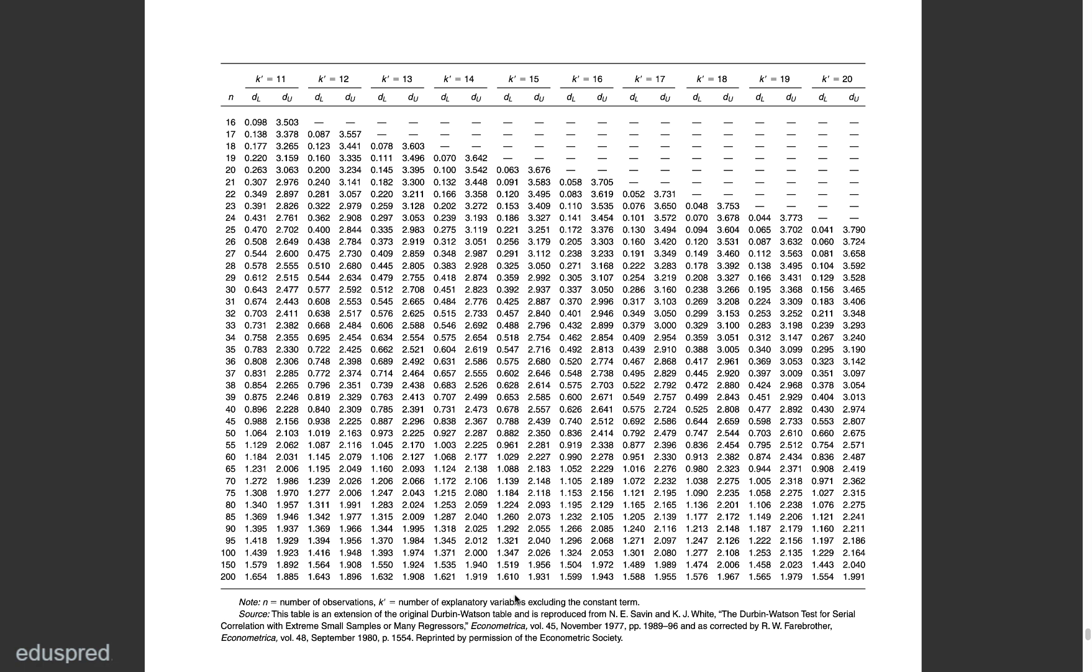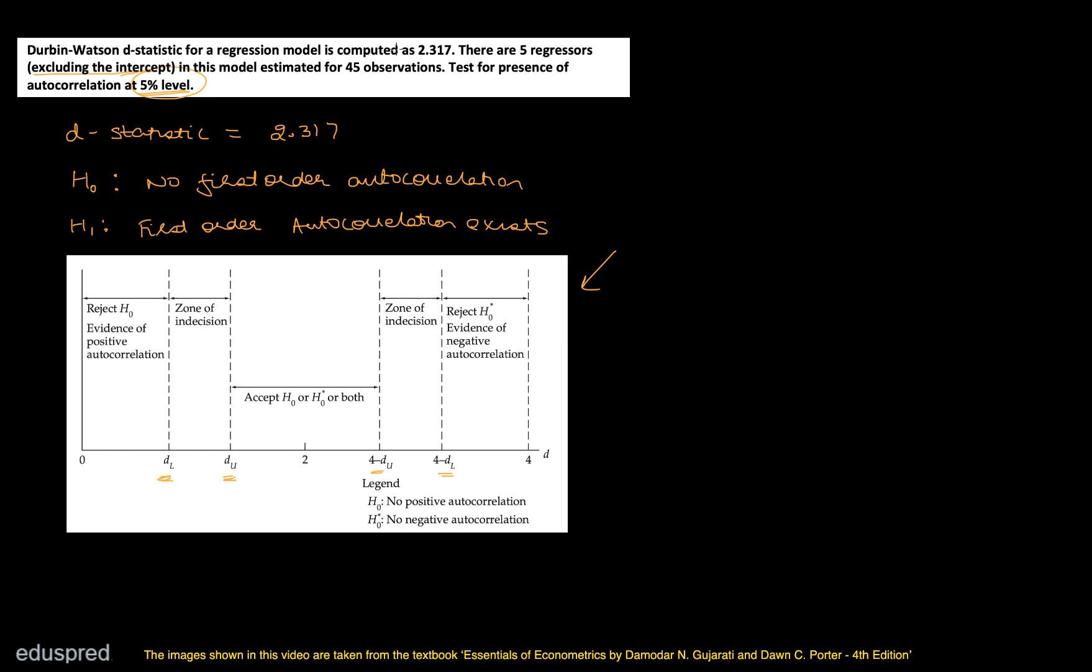Now what's the value of K' in our question? In our question, we are given that we have five regressors excluding the intercept. And regressors is nothing but a different name for independent variables only. So that means the model that we have, in that model, there are five independent variables excluding the intercept term.